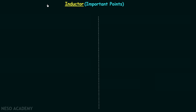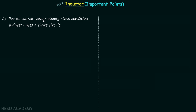In this lecture we are going to have a discussion on some important points related to inductors. The first point is: for a DC source under steady state condition, an inductor acts as a short circuit. Whenever we have a DC source, the voltage is constant and not changing with time, and under steady state condition we have waited enough to get over the transients, so the inductor acts as a short circuit.